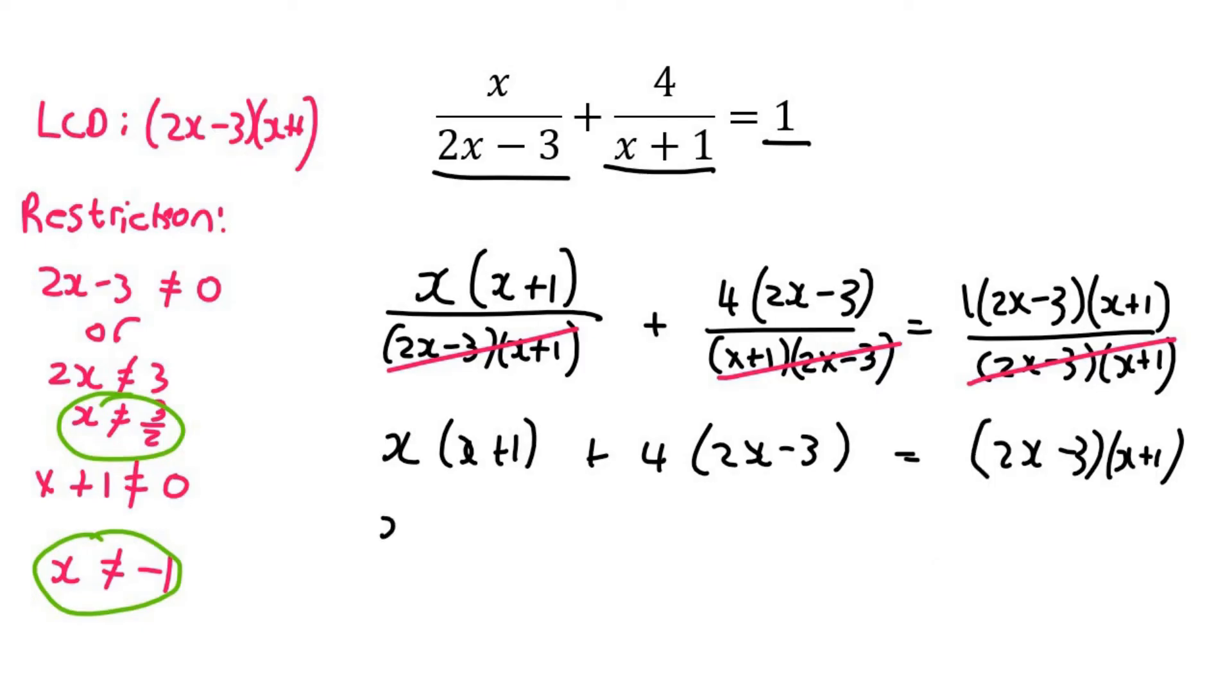Now we can multiply the brackets in. So it's x squared plus x plus 8x minus 12. Then this is 2x squared plus 2x minus 3x minus 3.